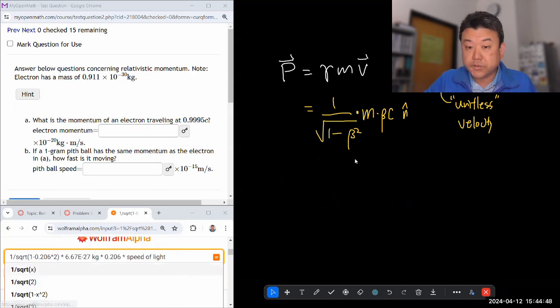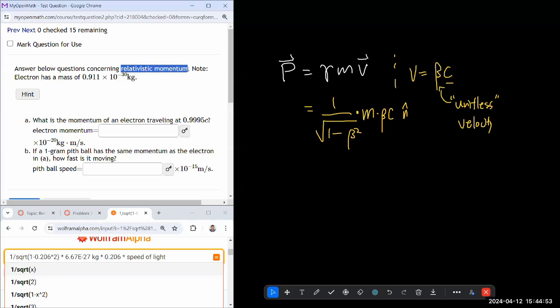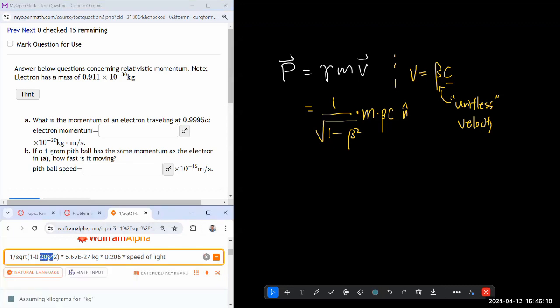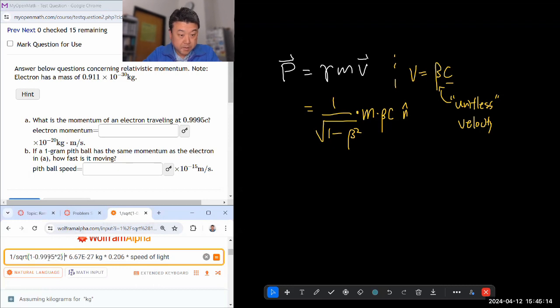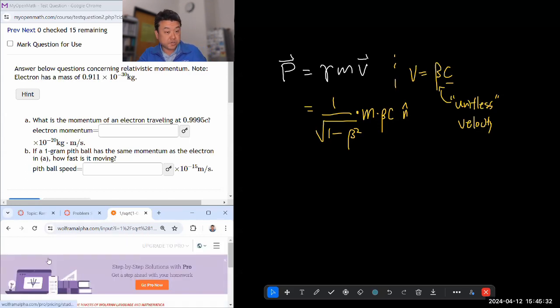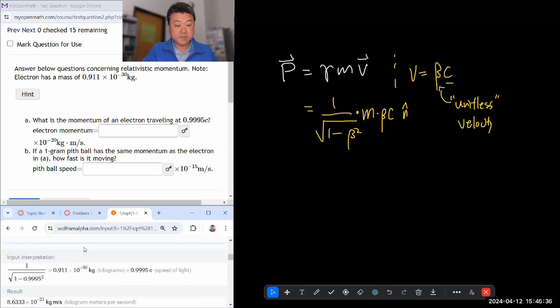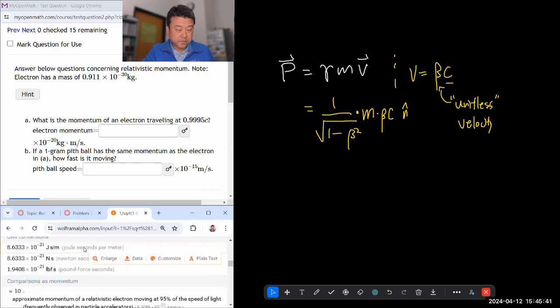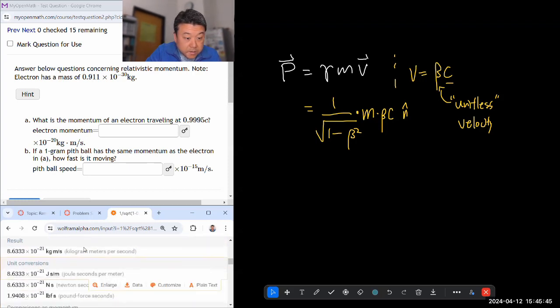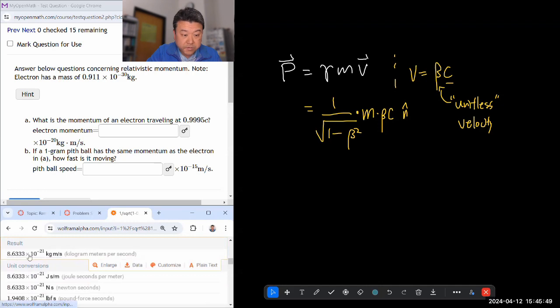Let's look at the next question for number sense. And we are still using relativistic momentum. This is answer below questions regarding relativistic momentum. Great that I already have relativistic momentum formula. Note electron mass. So when we need a mass, that's what we'll use. What is the momentum of an electron traveling at this beta? I can just replace the beta here with that new number 0.9995. Momentum of an electron. I need the mass of the electron. 0.911 times 10 to the power of minus 30 kilogram times the beta 0.9995 times the speed of light. So the electron momentum is again a super tiny quantity. The whole purpose of this question is to familiarize you with these typical numbers you will see.